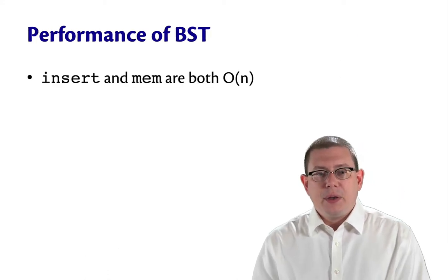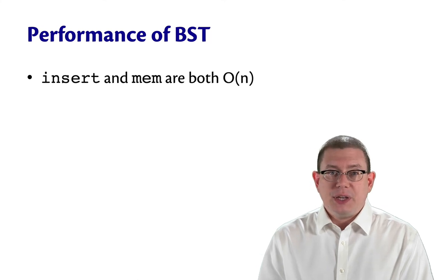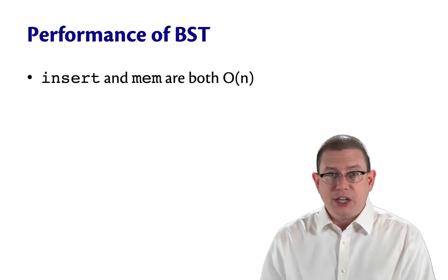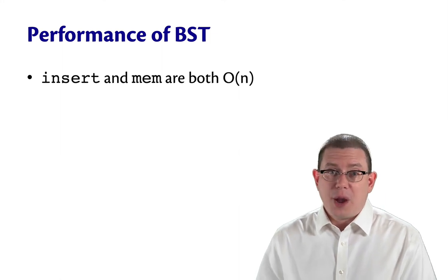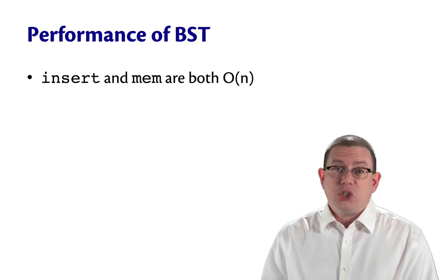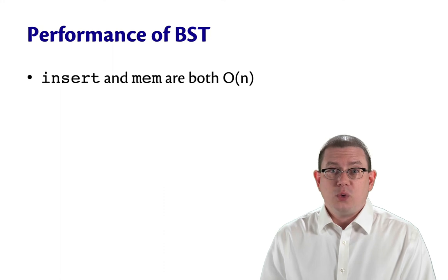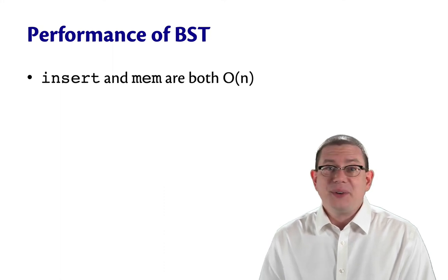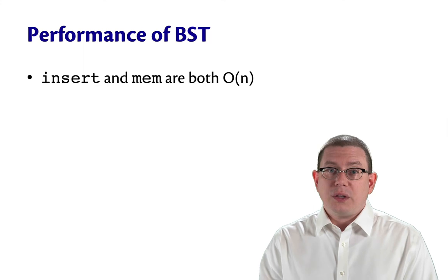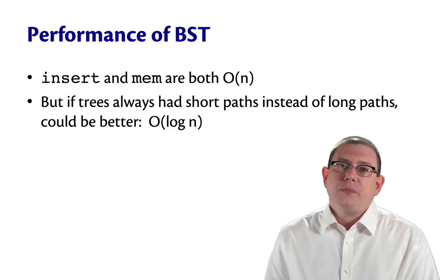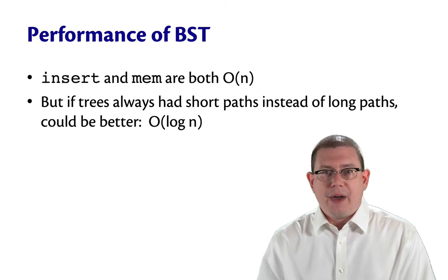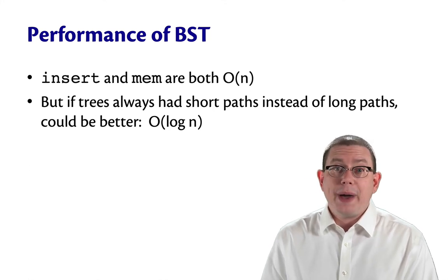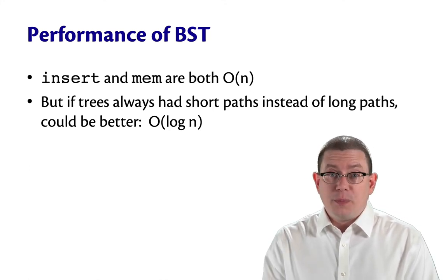So insert and mem both have an efficiency that is worst case linear for binary search trees. This is a common mistake that programmers sometimes make. They assume that binary search trees give you logarithmic performance. They don't. It really depends on the workload. But if you could find a way to guarantee that trees always had short paths instead of long paths, you could do better. You could get that logarithmic performance.